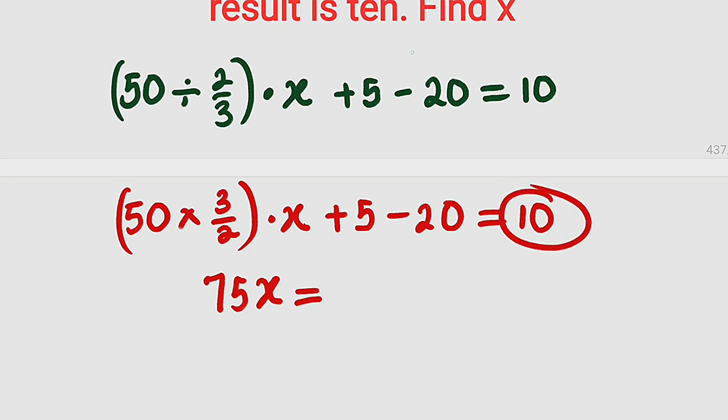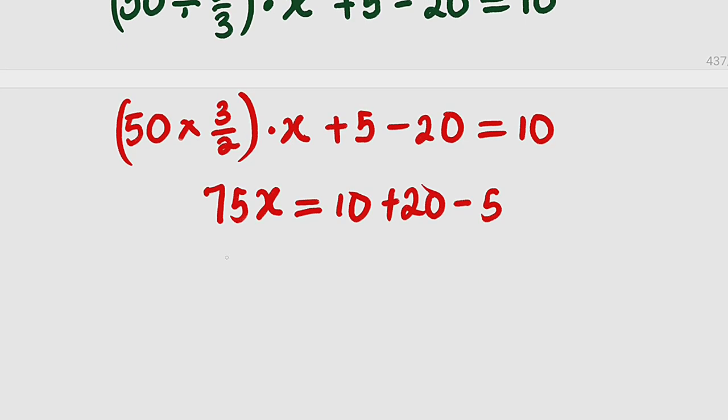Already we have 10 to the other side. Once negative 20 crosses over, it becomes positive 20. Once 5 crosses over, it becomes negative 5. So we have 75x equals 10 plus 20 is 30, and 30 minus 5 is 25.